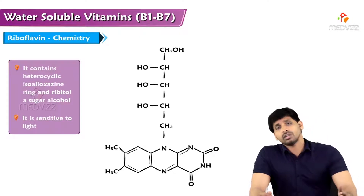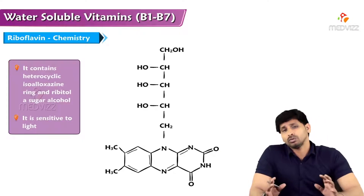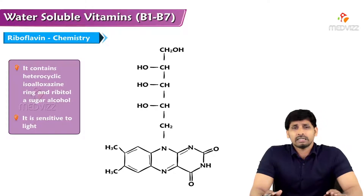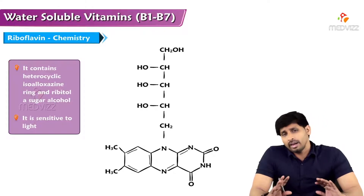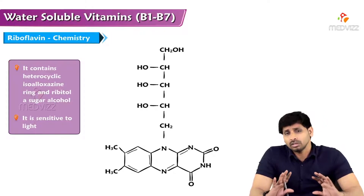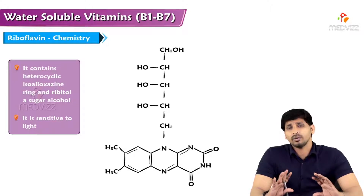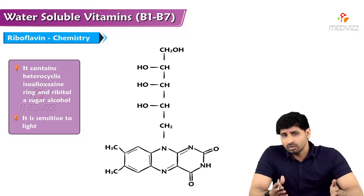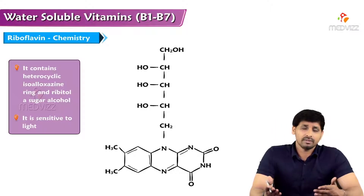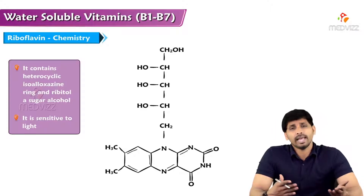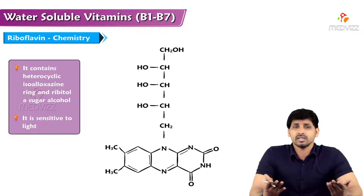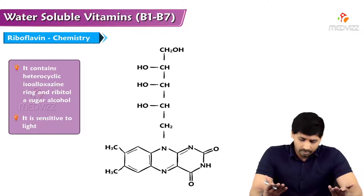There are different names of riboflavin: lactoflavin and ovoflavin, based on the substance where you get this vitamin B2. If it is found in milk, that is lactoflavin; if it is found in egg, that is ovoflavin; if it is in other pulses and cereals, it is known as riboflavin.